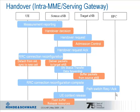And the paths between the evolved packet core and the base stations can be switched so that the data path now goes to the new base station. All the new packets are delivered to the new target base station. So all the UE contexts in the source base station can now be released, all buffers can be flushed and all the resources can be released there.